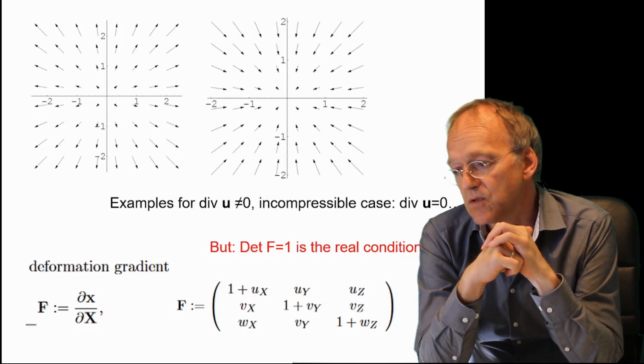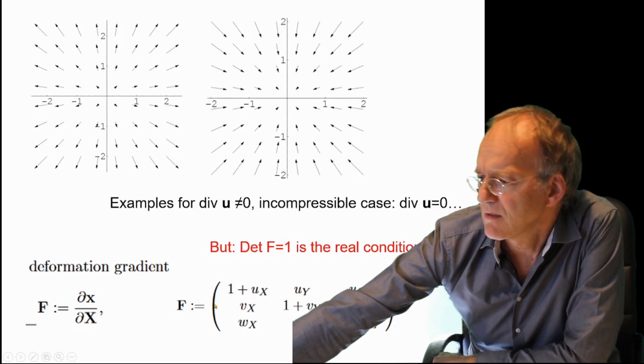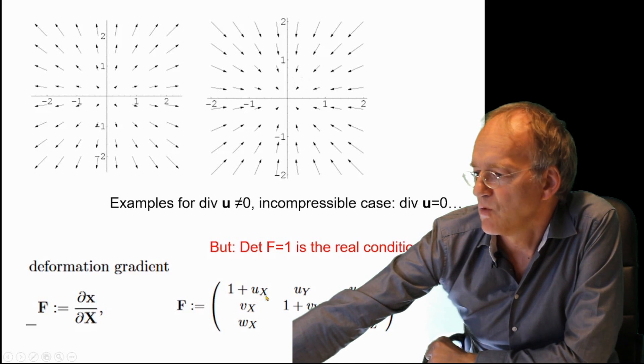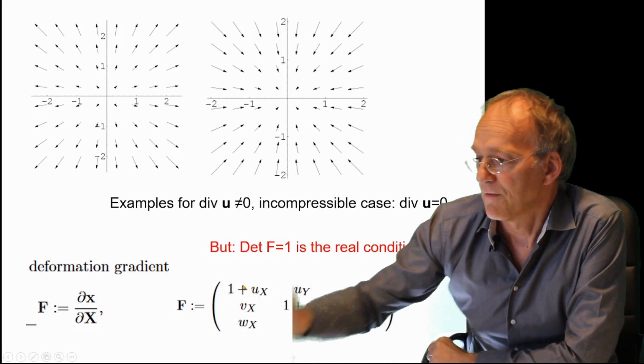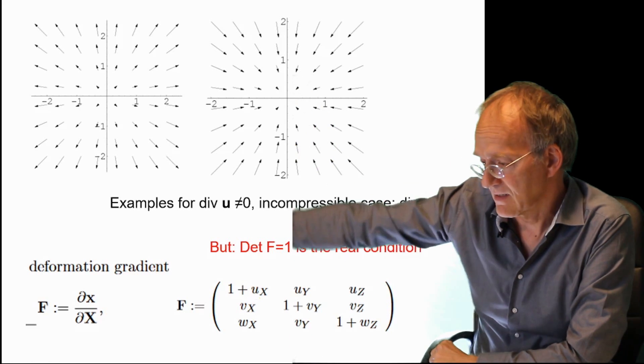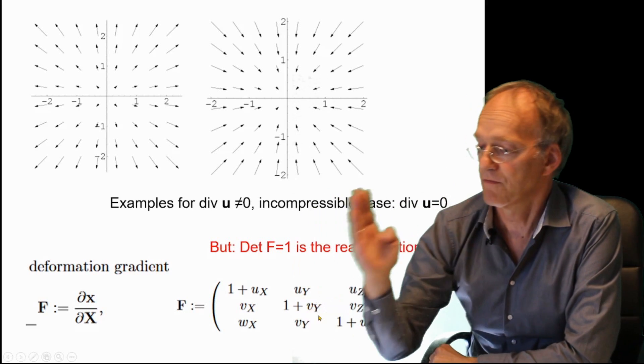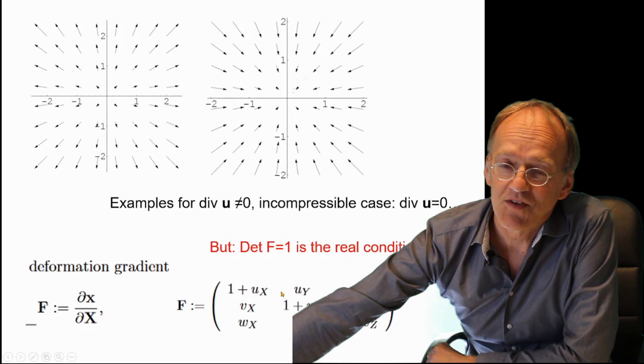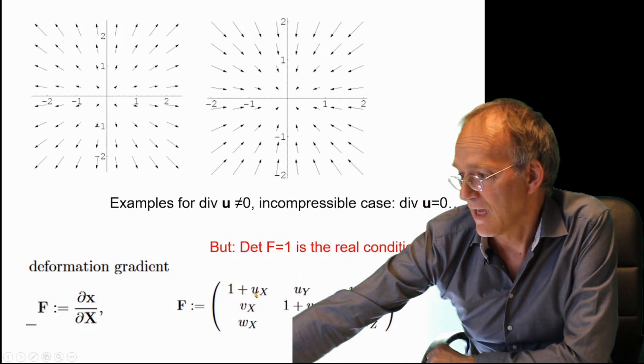That does not hold for real materials. And for real materials, you have to do non-linear continuum mechanics, which is more sophisticated, and you need to introduce another quantity which is called the deformation gradient. Well, it's a little bit technical, but this ux would indicate the derivative of the x component of the displacement in x direction. This would indicate the y derivative of the y component, and so on.